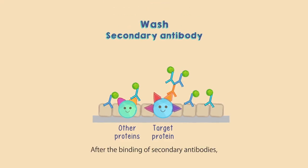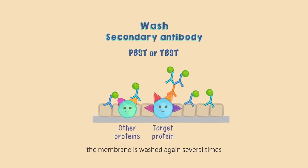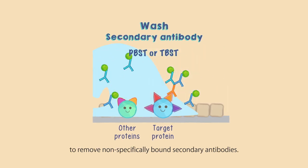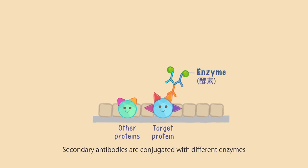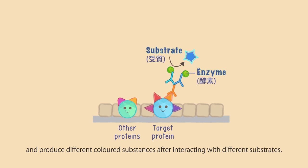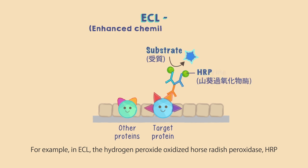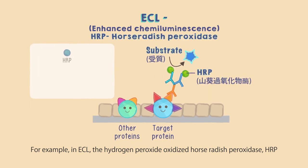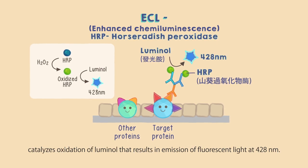After the binding of secondary antibodies, the membrane is washed again several times to remove non-specifically bound secondary antibodies. Secondary antibodies are conjugated with different enzymes and produce different colored substances after interacting with different substrates. For example, in ECL, hydrogen peroxide oxidizes horseradish peroxidase (HRP), which catalyzes oxidation of luminol that results in emission of fluorescent light at 428 nanometers.